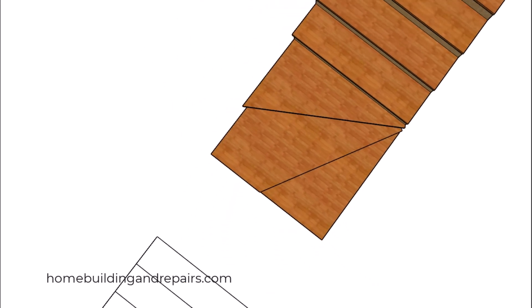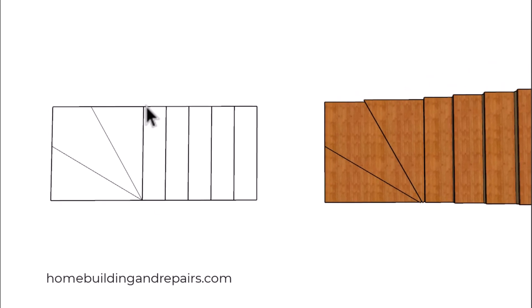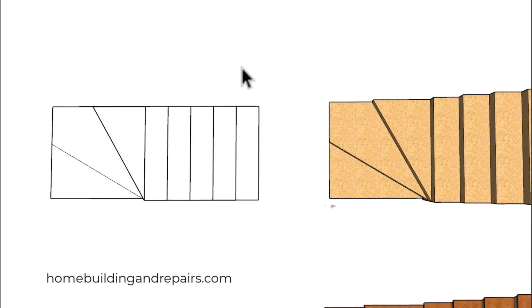Next up, let's take a look at what might be involved if we want the nosing to die into the center point and not the risers. That minor adjustment will simply be to move each one of the steps back the length of the nosing. This is what it would look like if we did that.